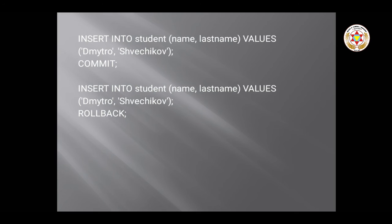COMMIT is used to save the transaction permanently, and ROLLBACK is used to undo the transaction. SAVEPOINT saves the transaction up to a particular point — rollback can undo up to a savepoint, but rollback cannot undo a committed transaction. These are all the database management system language commands which are very important and every student studying DBMS must know them all.